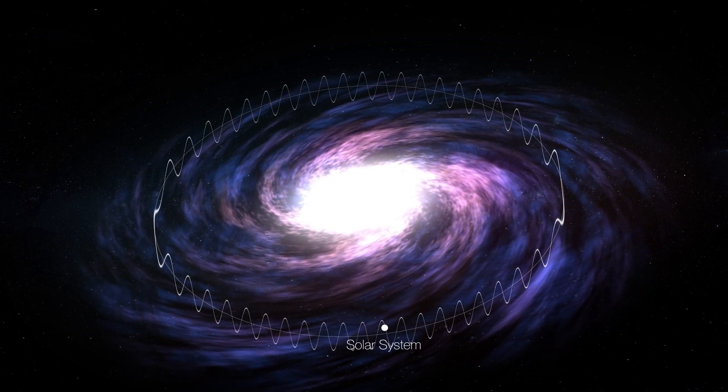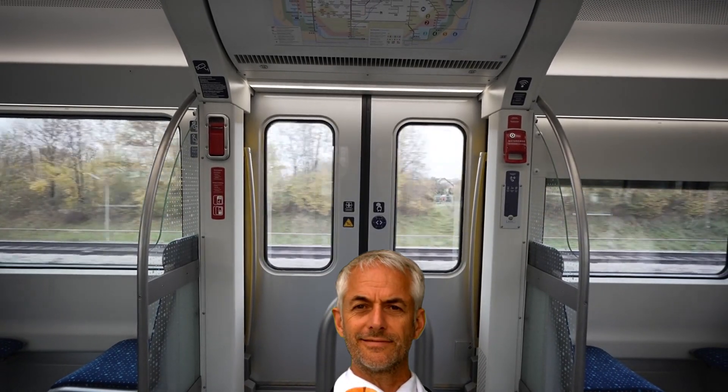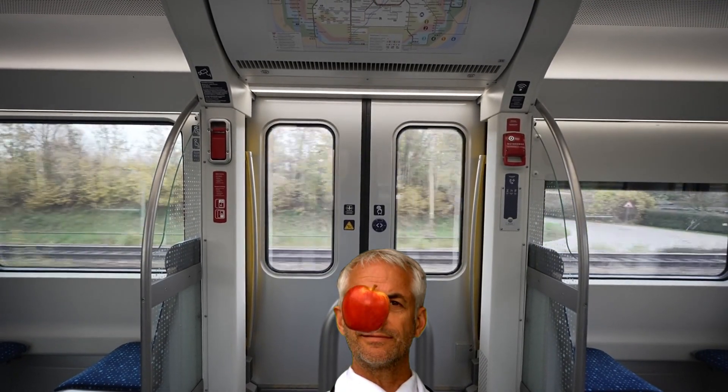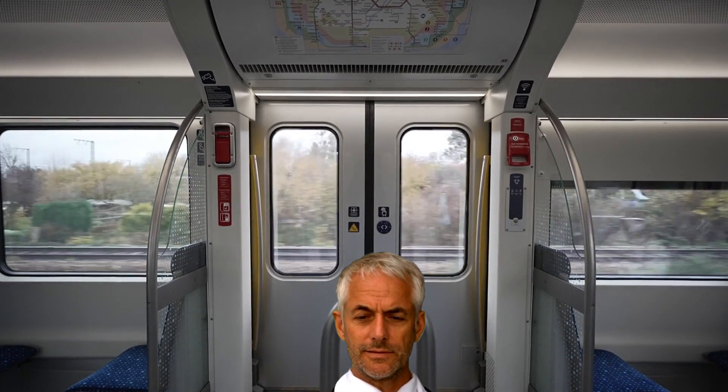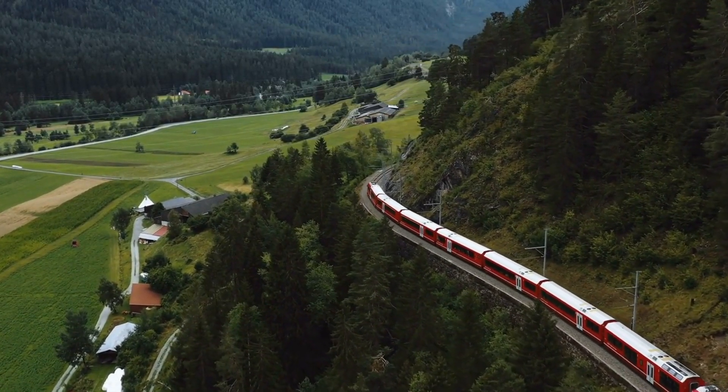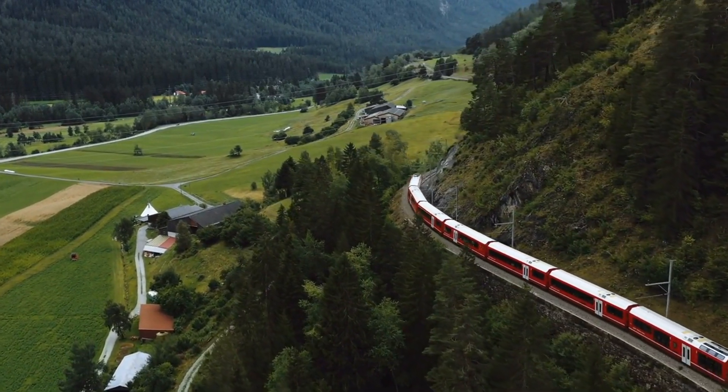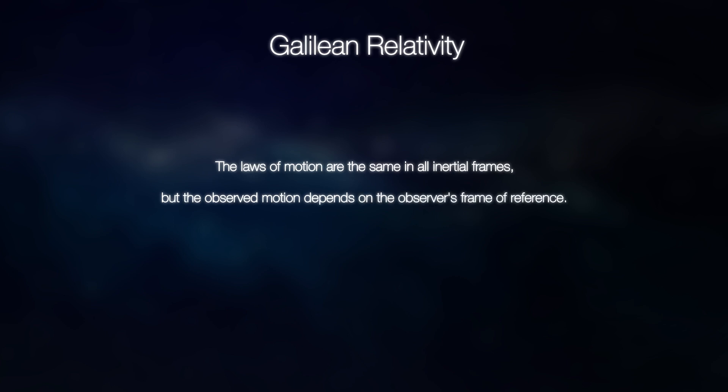However, is this view really correct? Suppose you're on a train. From your seat, you might toss an apple straight up into the air. To you, the apple appears to move straight up and then straight down. But to an observer outside the train, the apple follows a curved path, moving both vertically and horizontally along with the train. This is the fundamental principle of Galilean relativity.